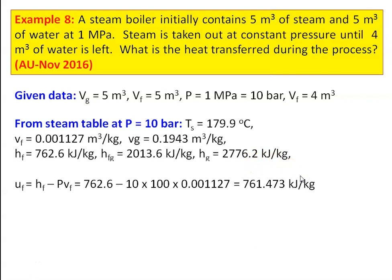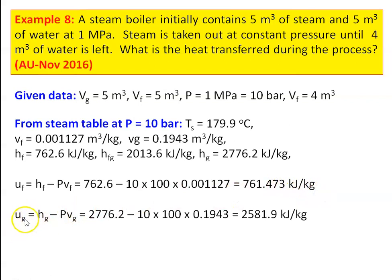We calculate the internal energy of the steam and water. Uf equal to Hf minus P into Vf equal to 762.6 minus 10 into 100 into 0.001127 equal to 761.473 kilojoules per kilogram. Specific internal energy of the vapour: Ug equal to Hg minus P into Vg equal to 2776.2 minus 10 into 100 into 0.1943 equal to 2581.9 kilojoules per kilogram.